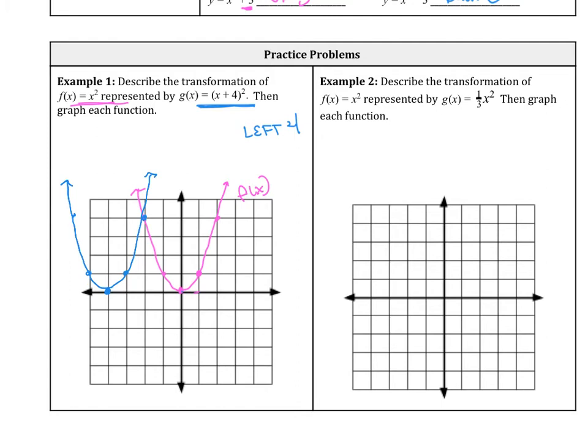So example two, so describe the transformation, 1/3 x squared. So this is going to be, so remember there's no horizontal, this is just a vertical shrink by 1/3. Okay? And then the parent function is x squared.